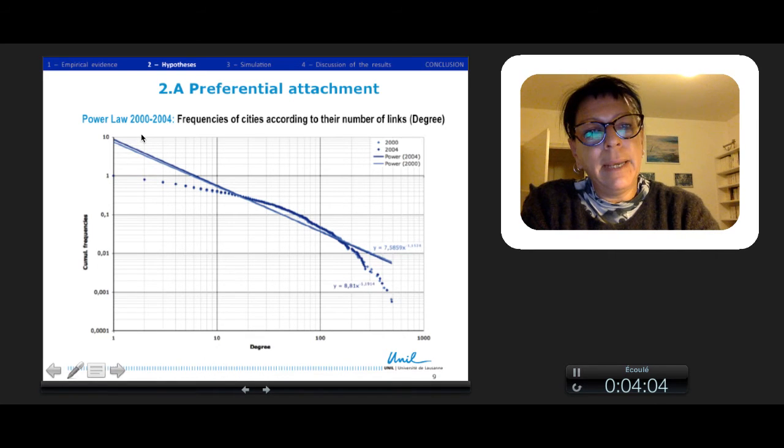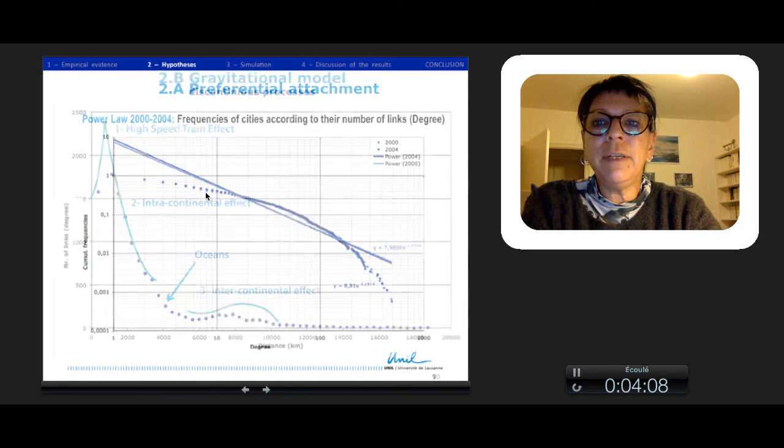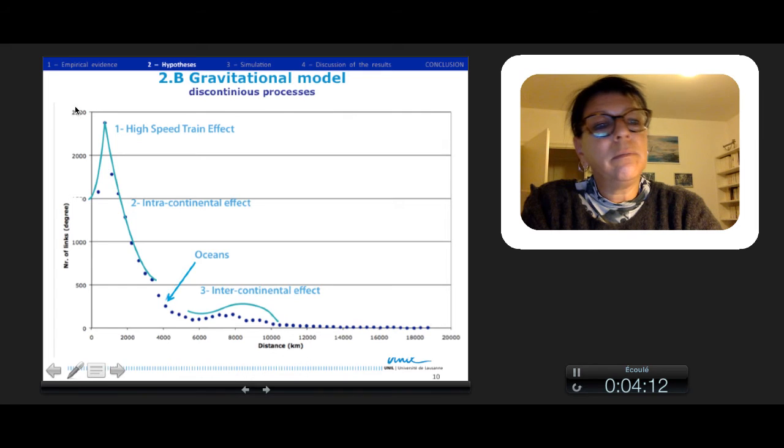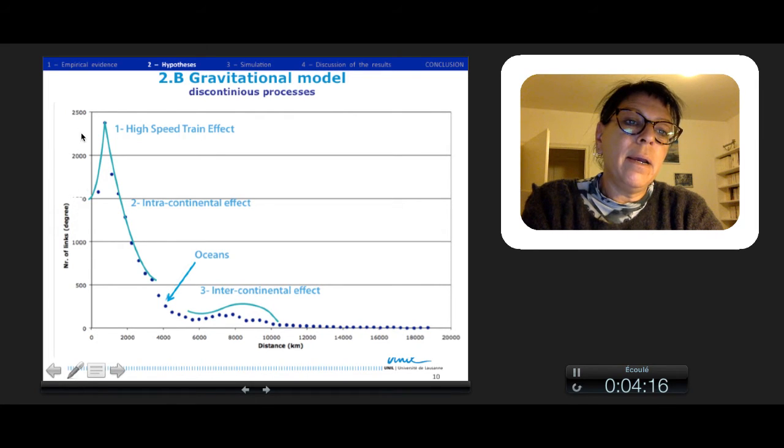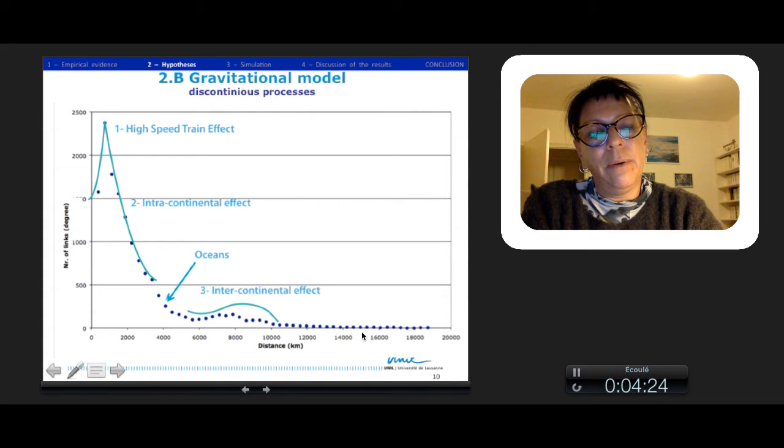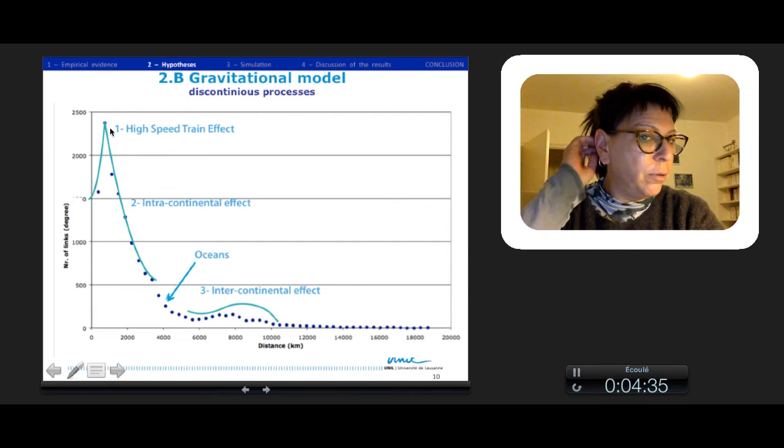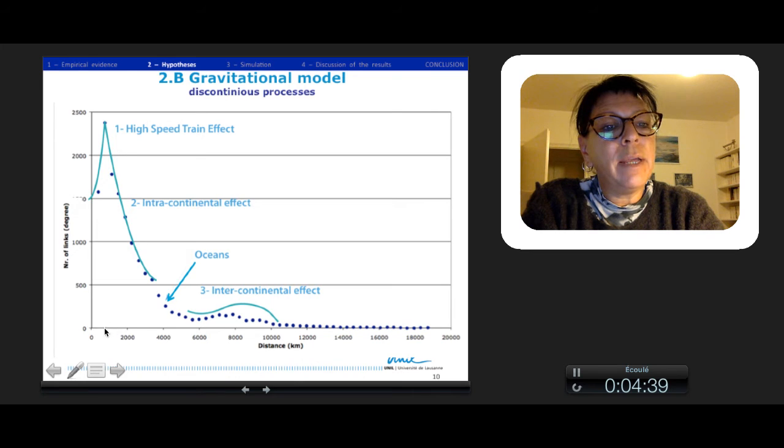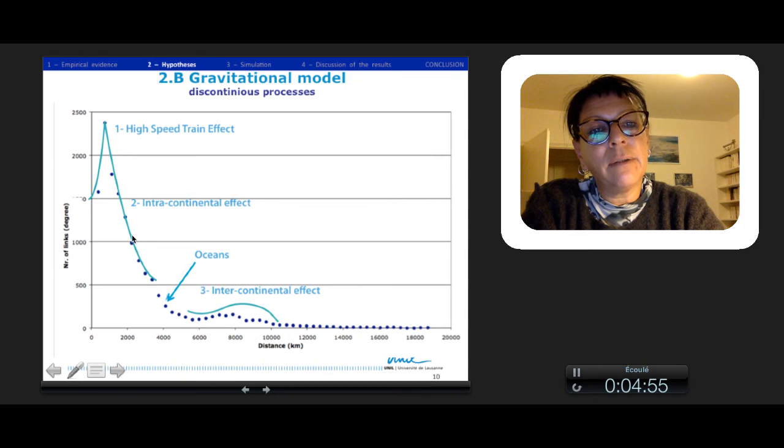For the gravitation model, we look at the percent number of nodes, the degree, according to the distance they have to their connections. We have Ice Peak Train explaining that we don't have a lot of connection lower than 800 kilometers. Then we have a decrease of the number of nodes with distance, and here the intracontinental effect, the ocean, and the intercontinental effect.